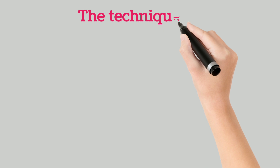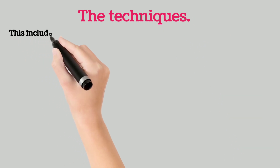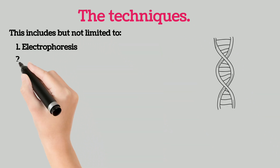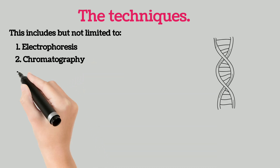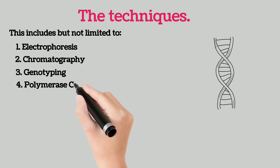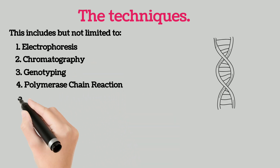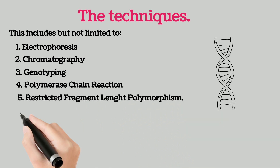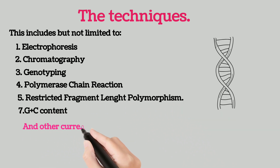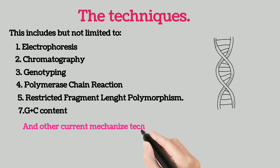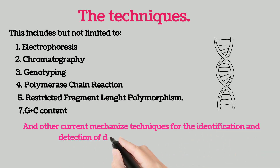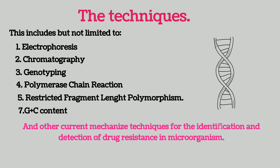The techniques include but are not limited to: 1. Electrophoresis, 2. Chromatography, 3. Genotyping, 4. Polymerase chain reaction, 5. Restricted fragment length polymorphism, 6. G plus C content, and other current mechanized techniques for the identification and detection of drug resistance in microorganisms.